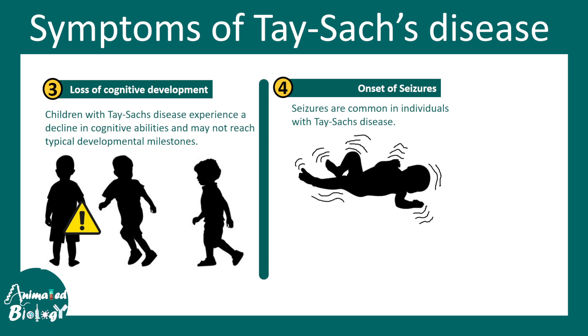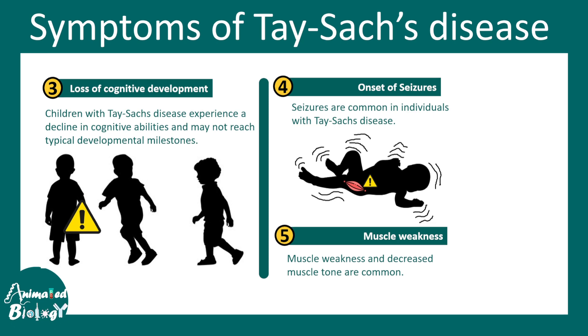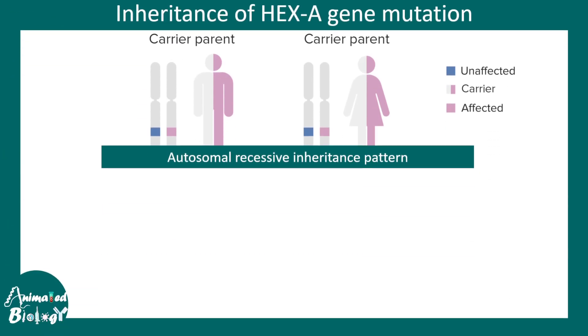There is also an onset of seizures in early life, which is common, though not present in every patient. Muscle weakness is also pretty common in Tay-Sachs disease.